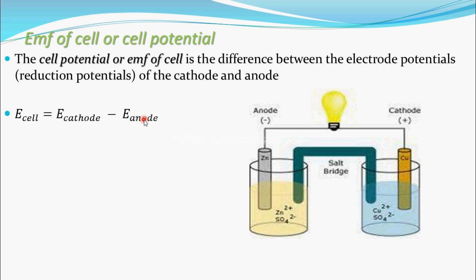By convention, we always represent the cathode on the right side. In any galvanic cell, the cathode is always on the right side and the anode is always on the left side. So we can write the cell potential as E_right minus E_left.